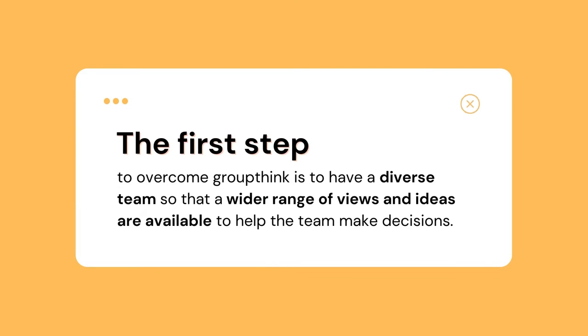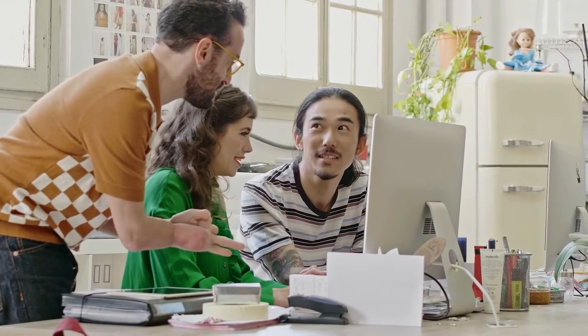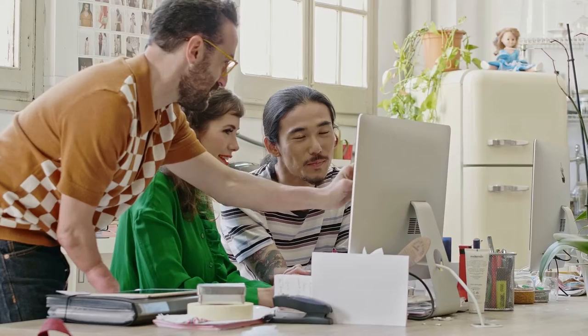Therefore, the first step to overcome groupthink is to have a diverse team so that a wider range of views and ideas are available to help the team make decisions. Of course, all members need to welcome and be open to different approaches, opinions, and ideas. As such, it's important to make sure in the facilitation of group discussions that all members can ask questions and express their differing viewpoints and opinions.